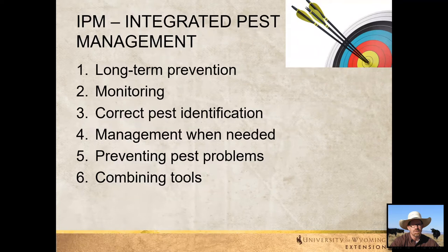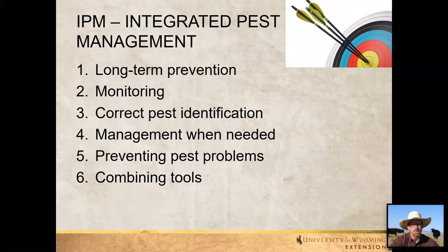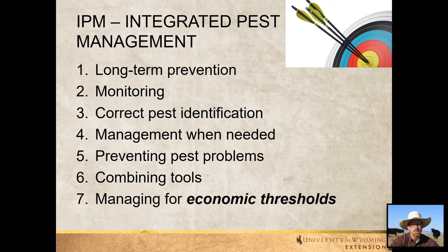I'm going to talk about integrated pest management, or IPM. This includes six strategies: long-term prevention, monitoring, correct pest identification, management when needed, preventing pest problems, and combining tools — using different strategies in an integrated way. But the seventh is managing for economic thresholds: understanding when an animal is so infested that treatment will pay off — that the cost of treatment will be offset by reducing those losses.